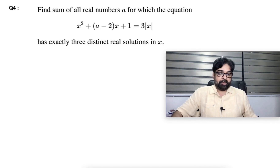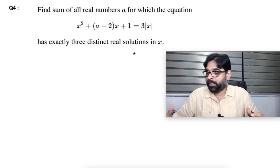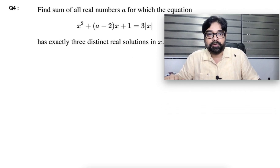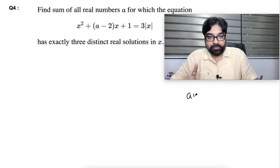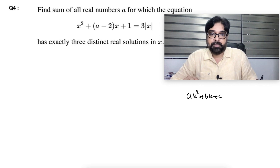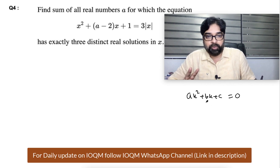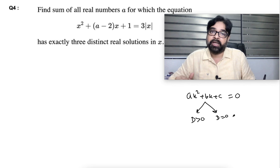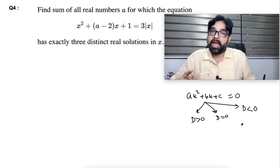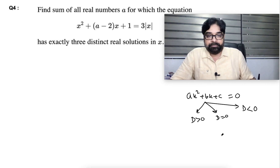This is an equation-based question. Some fundamental things you have to use: if any quadratic equation has real roots, D greater than zero means roots will be real and different, D equal to zero means roots will be real and equal, and D less than zero means roots will be imaginary and conjugate — meaning one root is a plus iB and the other will be a minus iB.